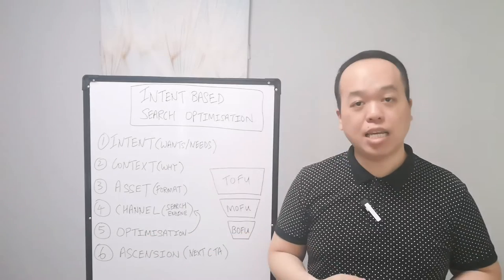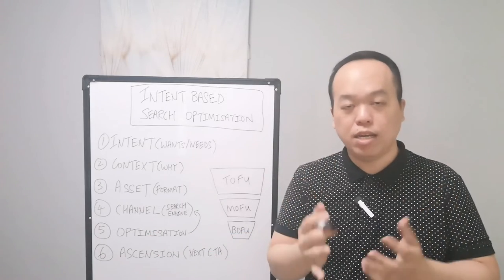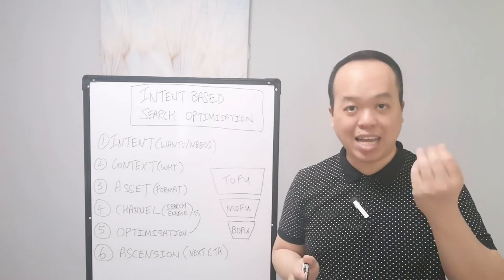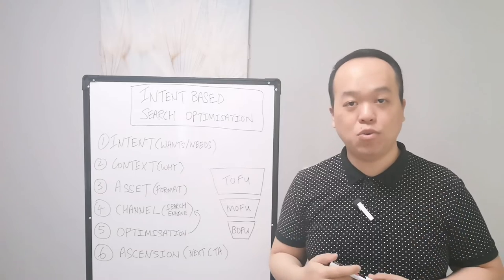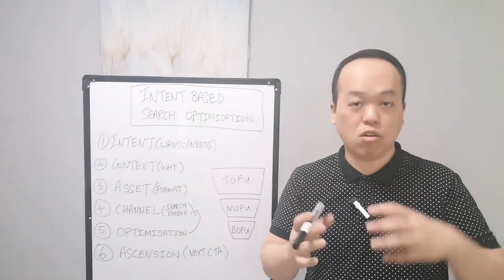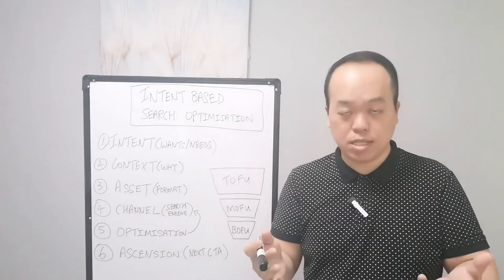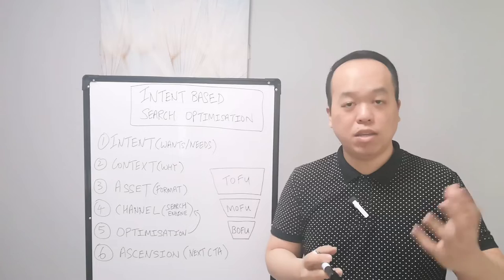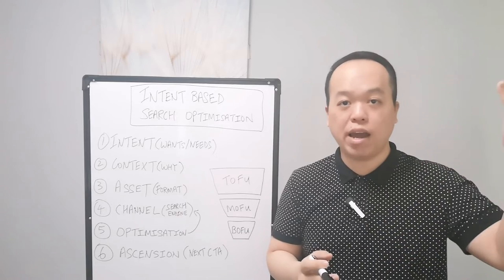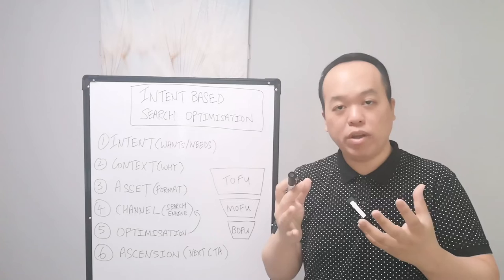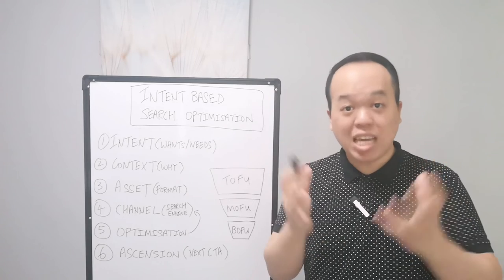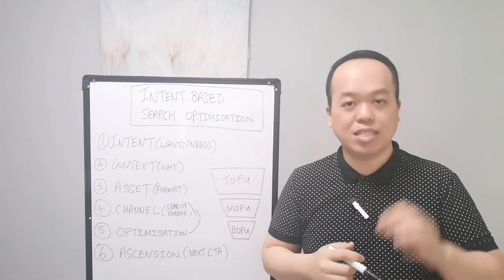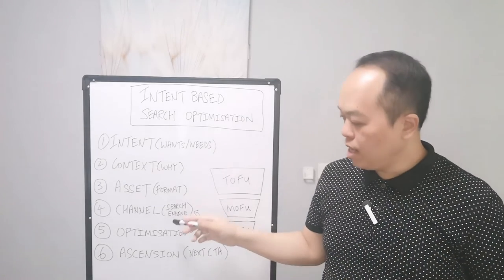The fifth step is optimization. Optimization depends on whichever channel your asset sits in. For example, if you decide to create a website to talk about your yoga packages, you need to optimize it in terms of your meta title, description, URL, website loading speed, images, and keyword research — all of these must be fully optimized before it becomes searchable.